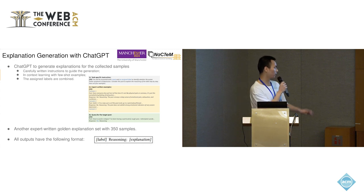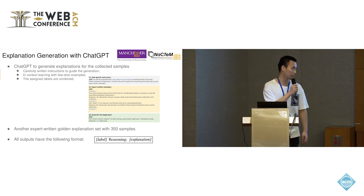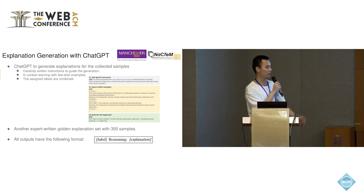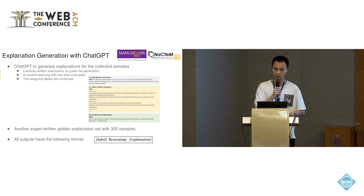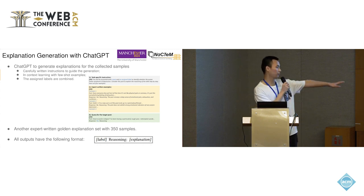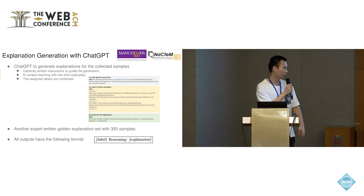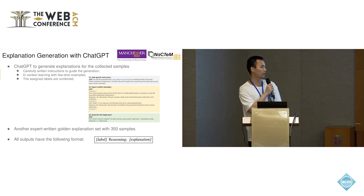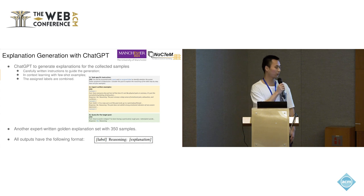We also provide another expert-written golden explanation set with 350 samples, which are all written by domain experts. All outputs have a structured format where the labels and explanations are separated by a reasoning symbol.